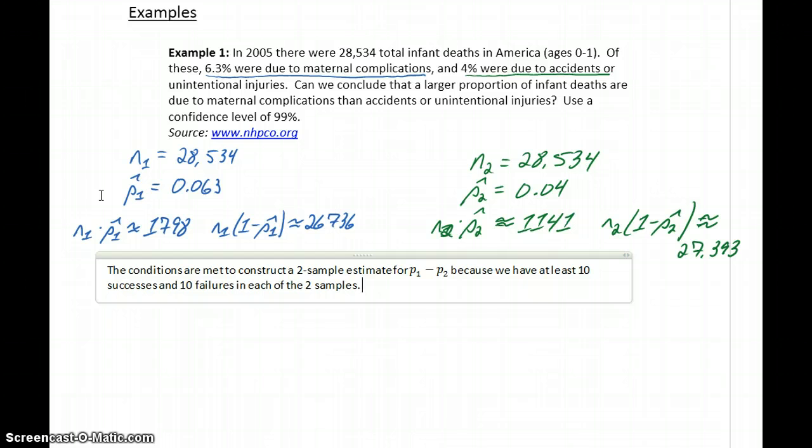We constructed a 99% confidence interval. The 99% confidence interval estimate for P1 minus P2 is 0.0183 to 0.0278.